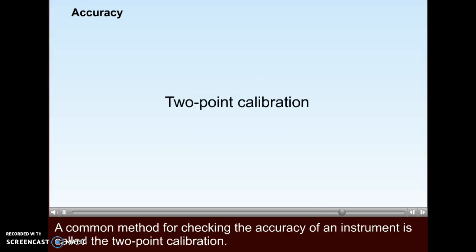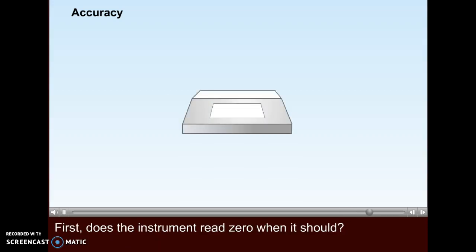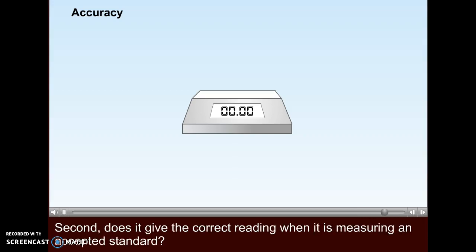A common method for checking the accuracy of an instrument is called the two-point calibration. First, does the instrument read zero when it should? Second, does it give the correct reading when it is measuring an accepted standard?